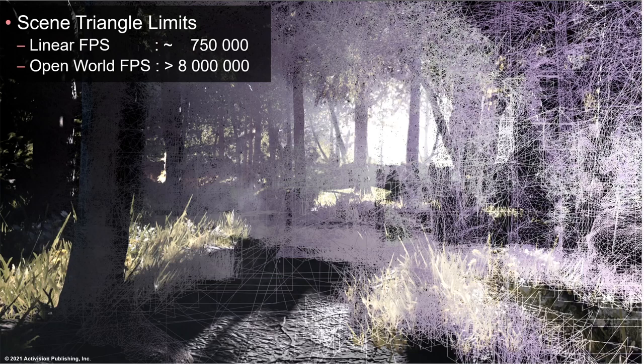Our titles are becoming increasingly complex when it comes to rendering scenarios. Moving from tight and closed spaces to open worlds literally opened the floodgates for all new rendering challenges. We threw in a lot of foliage, which has always been problematic to render at high frame rates. Historically, we had very tight budgets of about 700,000 triangles submitted to GPU per frame. Moving to open world scenarios, our scenes are suddenly hitting 8 million triangles — a tenfold difference on the same engine and same target platform.